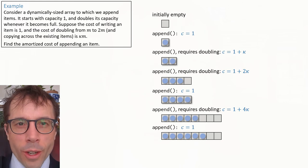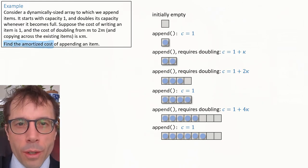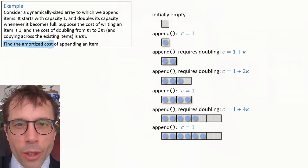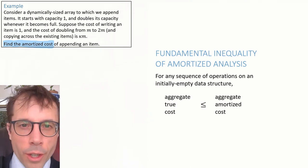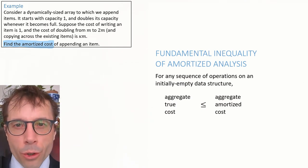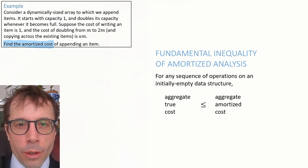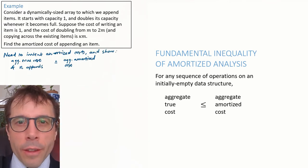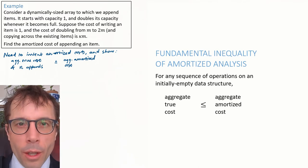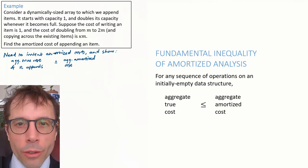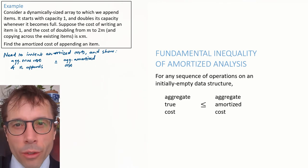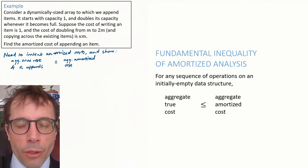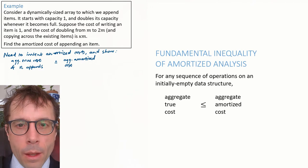Now let's try and answer the question. It asks us to find the amortized cost. And what is an amortized cost? It's a cost that satisfies the fundamental inequality. For any sequence of operations on an initially empty data structure, the aggregate true cost must be less than or equal to aggregate amortized cost. So the question is asking us to invent amortized costs and to calculate the aggregate true cost of an arbitrary sequence, let's say a sequence of N appends, and compare it to the sum of N of our amortized cost and show that the fundamental inequality is satisfied.